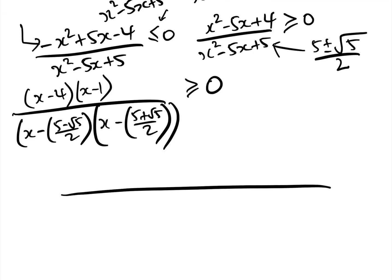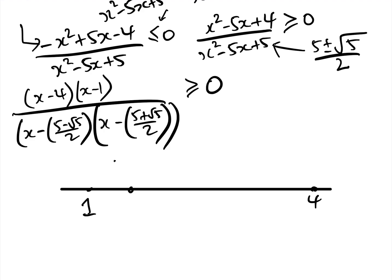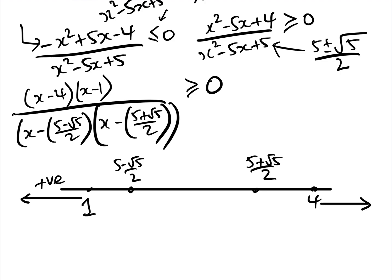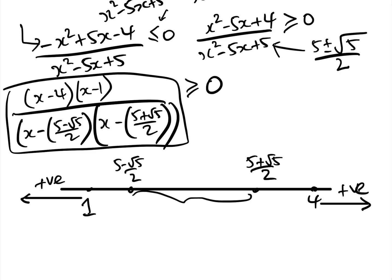Since there are four terms, we use a number line with the four critical values: 1, (5 − √5)/2, 4, and (5 + √5)/2. For x less than the smallest value, all four factors are negative, so the product is positive. For x greater than 4, all are positive — also positive. In the region between (5 − √5)/2 and (5 + √5)/2, two factors are positive and two are negative, so the product is also positive.